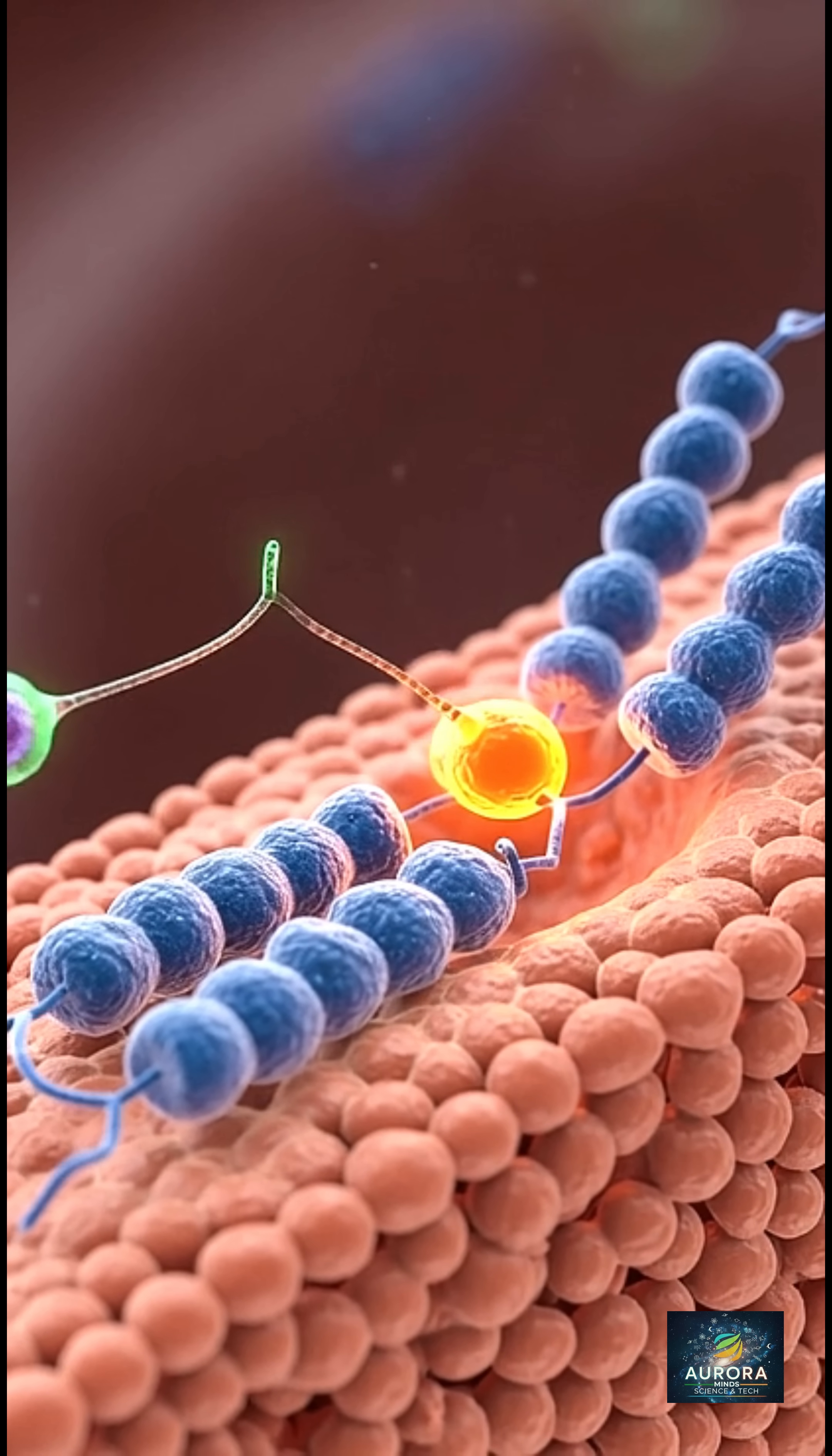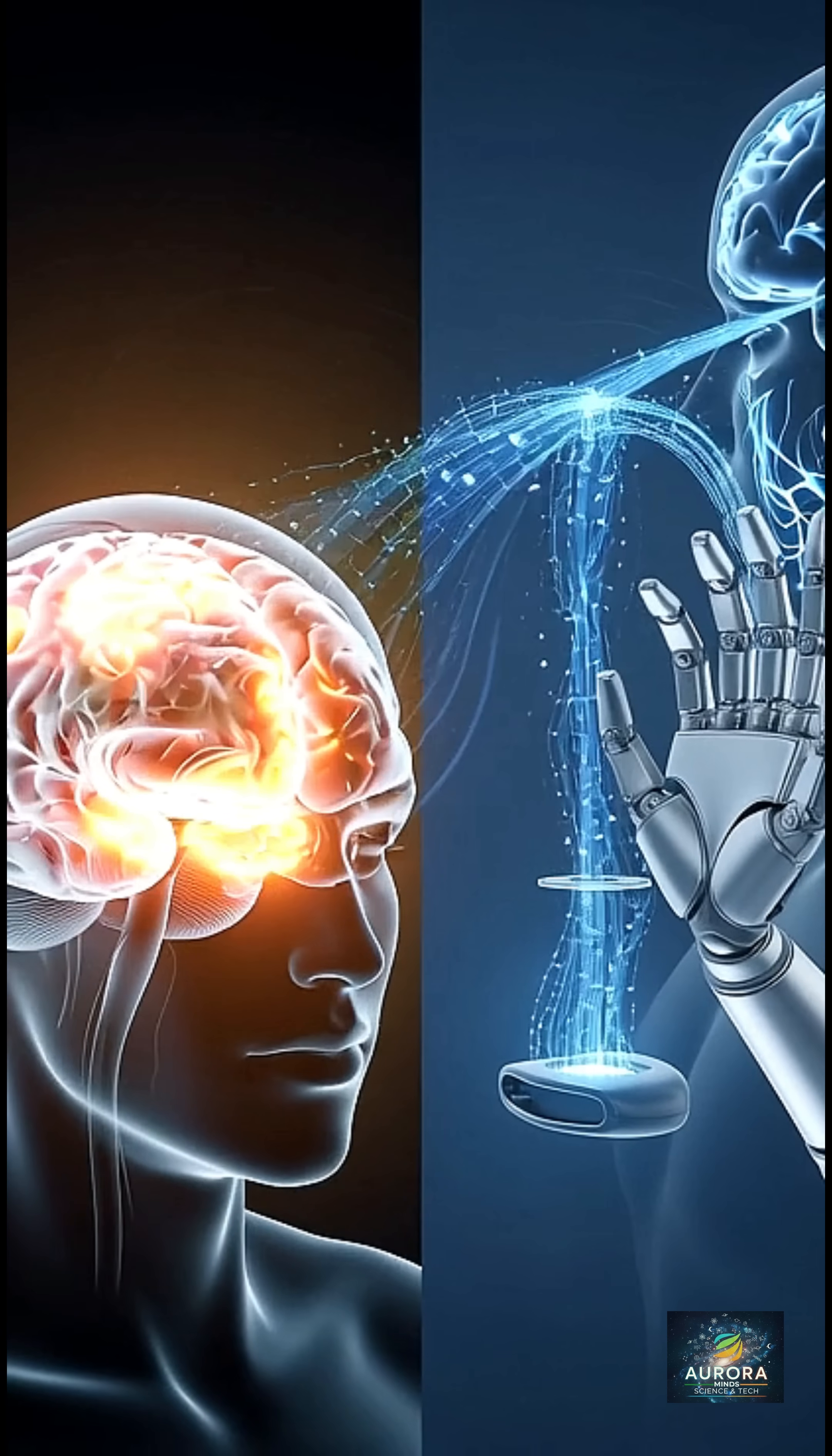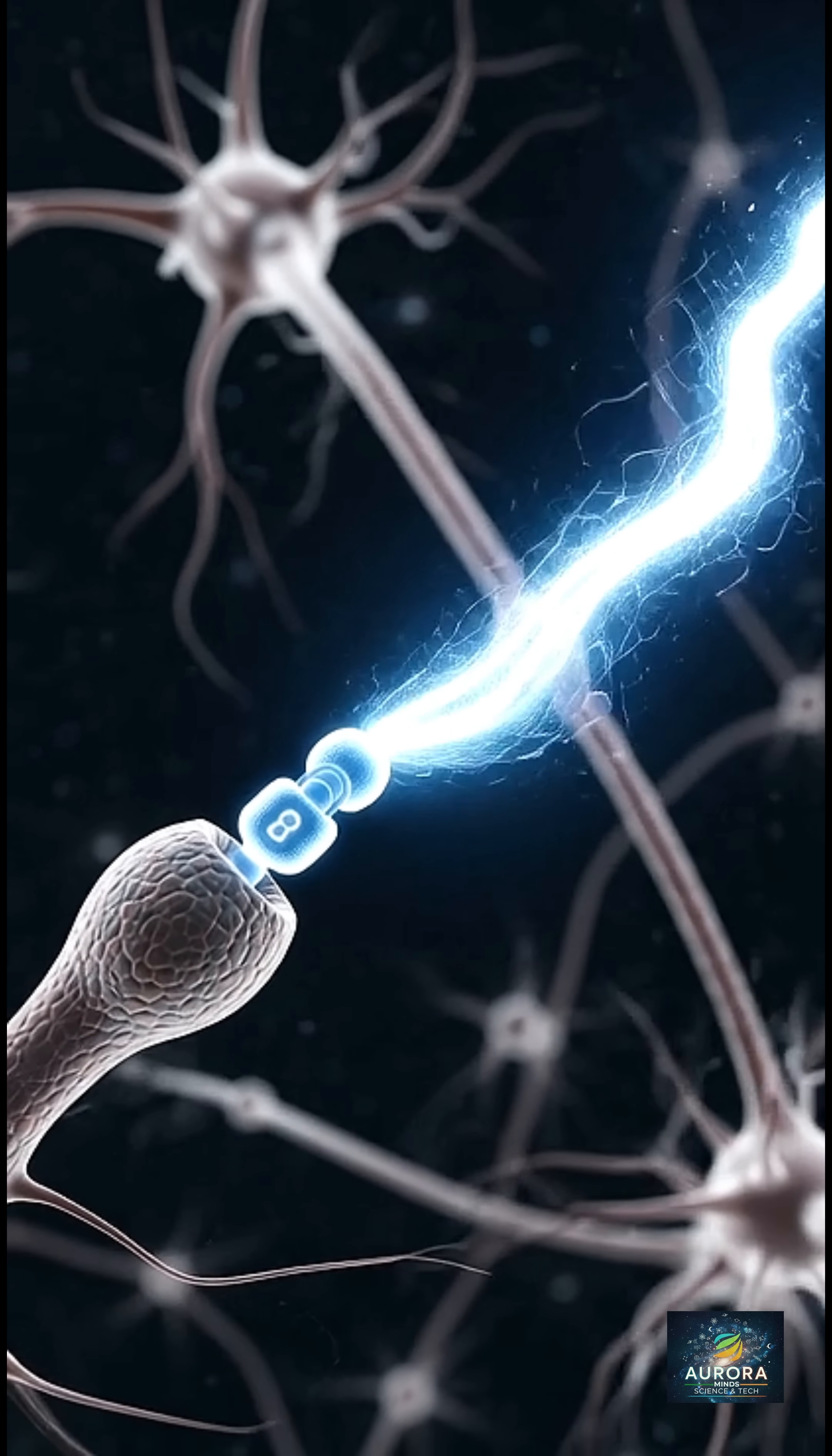It's like sending a text: an electrical signal triggers chemical letters into a tiny mailbox, received by a lock on the next neuron to start its own signal.